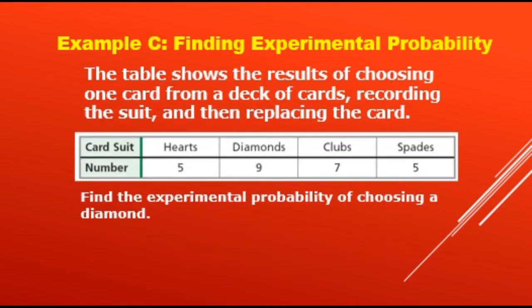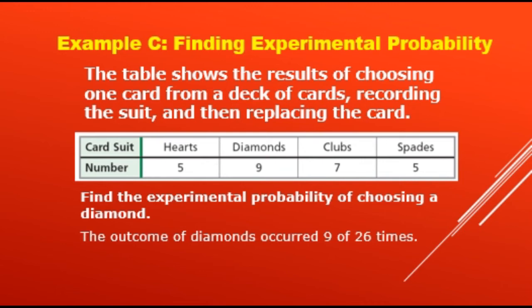Next example: the table shows the results of choosing 1 card from a deck of cards, recording the suit, and then replacing the card. We have 5 hearts, 9 diamonds, 7 clubs, and 5 spades, for a total of 26 trials. Find the experimental probability of choosing a diamond. The outcome of diamonds occurred 9 out of 26 times, so P(diamond) = 9 over 26.